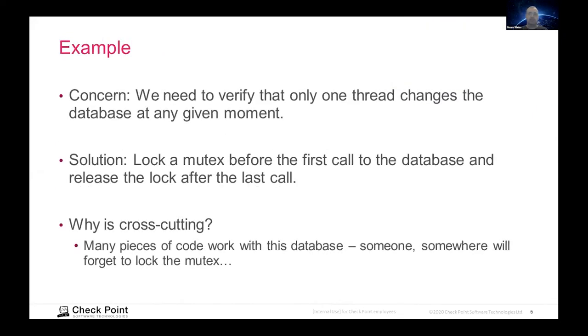Okay. So let's go to the example. So let's say we have a concern. I need to verify that one thread accesses the database and does some operations on the database, it won't collide with the other threads. So the classic solution is of course to lock a mutex before we start working on the database and release it when we are done working with the database. Okay. Very straightforward. Why is there a cross-cutting concern? Because there are a lot of places and a lot of people who write code for that database, and they all have to do the same thing and lock using the same mutex and releasing it afterwards. And someone, somewhere will forget to do it. It's inevitable. And when that will happen, it will be very hard to trace and realize that that's the issue that caused the problem.